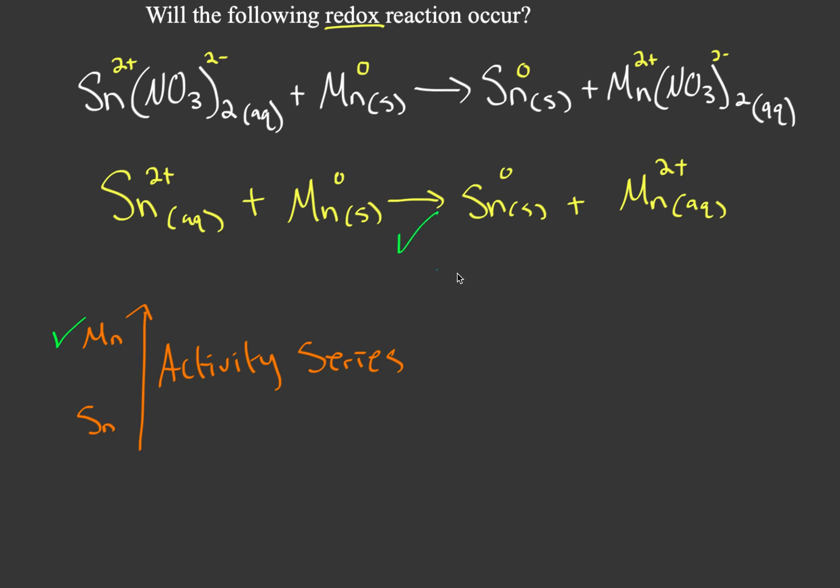Now say you actually want to go backwards, will this happen? Well, here tin is being oxidized if it were to go backwards, and since tin is lower on the activity series, it's not going to get oxidized in the backwards reaction. So no, this backwards reaction would not happen.